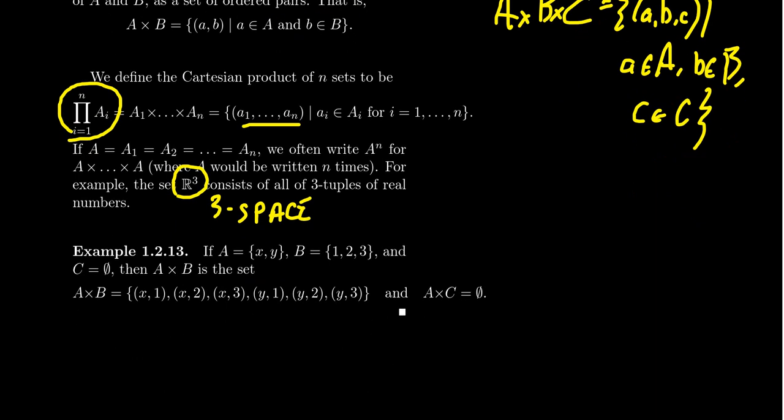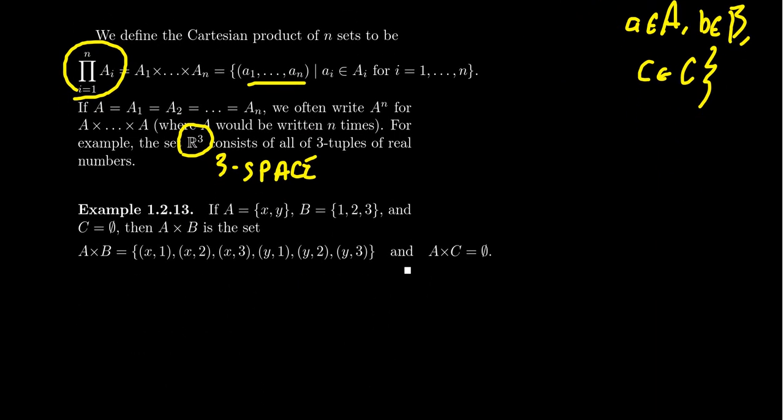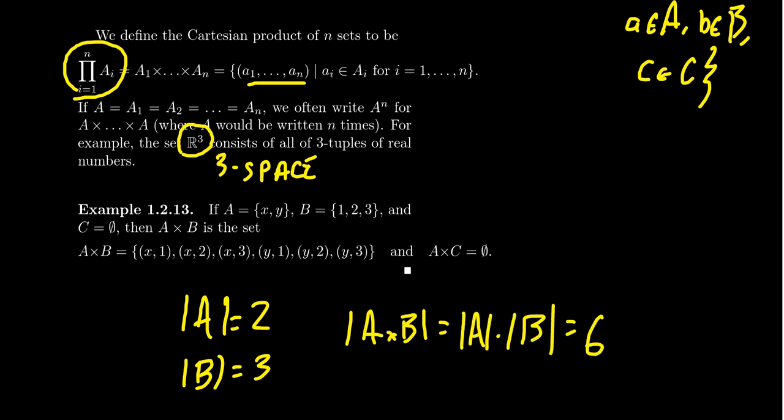So if you were to take these two sets right here, take the set A, which is just the letters X and Y, whatever those things mean, take B to be the numbers one, two, and three, then the direct product of A times B, what you're going to do is you're going to take every possible combination of something from A with something from B. And so since A has two elements in it, and B contains three elements, when you take the Cartesian product, we can anticipate this Cartesian product, A cross B, it's going to have A times B many elements in there. That is, you're going to get six elements, because you look at every possible combination.